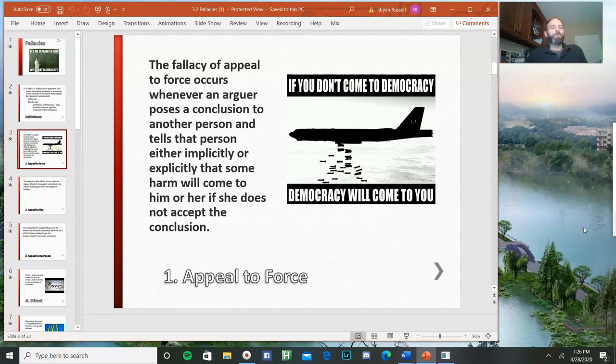The first fallacy that we'll cover is the appeal to force. That occurs whenever an arguer poses a conclusion to another person and tells that person, either implicitly or explicitly, that some harm will come to him or her if she does not accept the conclusion. And furthermore, that the arguer will bring about the harm. So slightly distinct from a fallacy that will come later, the appeal to fear. A part of the appeal to force that's really important is that the arguer is in control over the bad things happening to the listener.